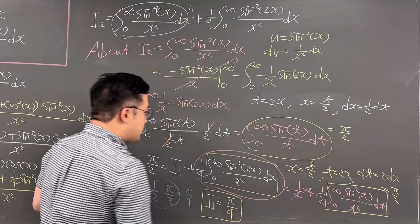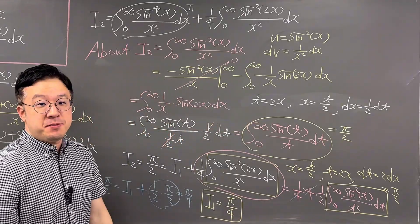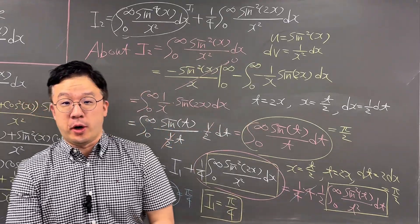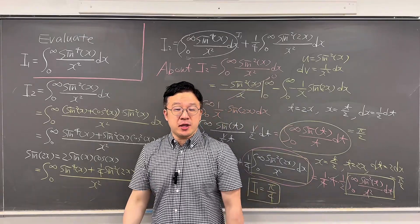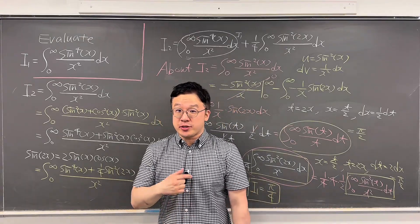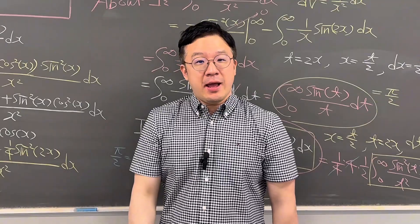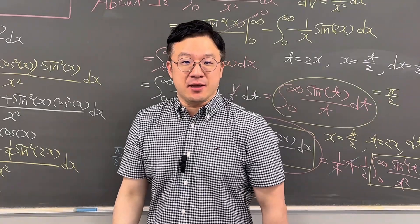So based on all of this, I1 equals π/2 minus π/4, which is π/4. So the answer for this question is π/4. It's a pretty interesting trigonometric integral — how amazing and awesome that the answer is π/4!